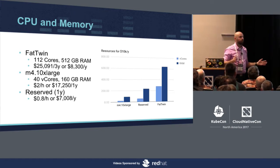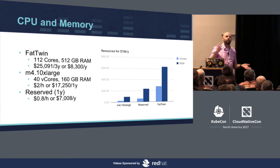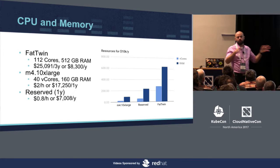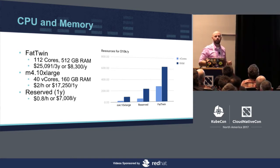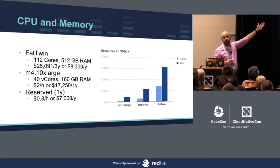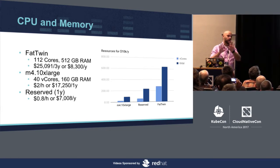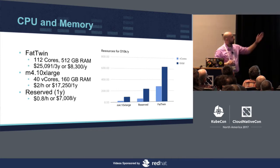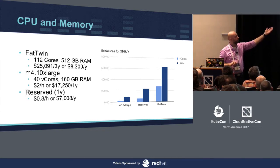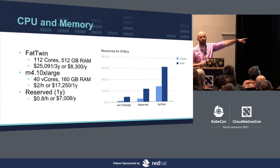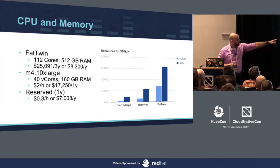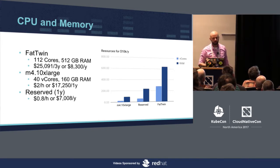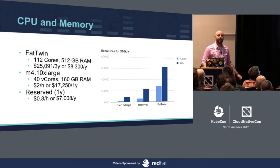How much would a comparable box cost in Amazon? Most people said they usually run M4 instances. The M4 10xlarge on-demand instance comes with 40 vCores — and please remember, a vCore and a physical core are very different; there is a several-times performance difference — and 160 GB of RAM, costing about $17,000 a year. The graph on the right shows how much CPU and memory you get per dollar for the fat twin versus an on-demand instance. You can get reserved instances which are cheaper, but the gap is still huge.